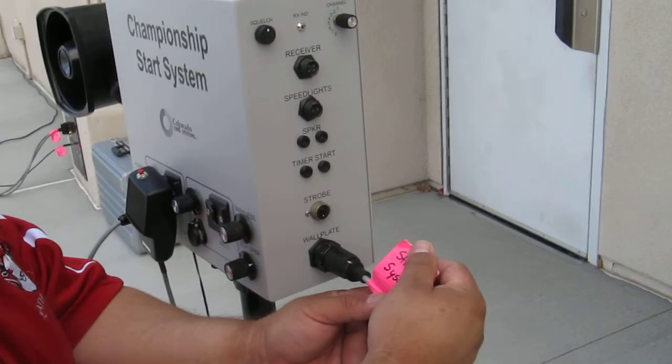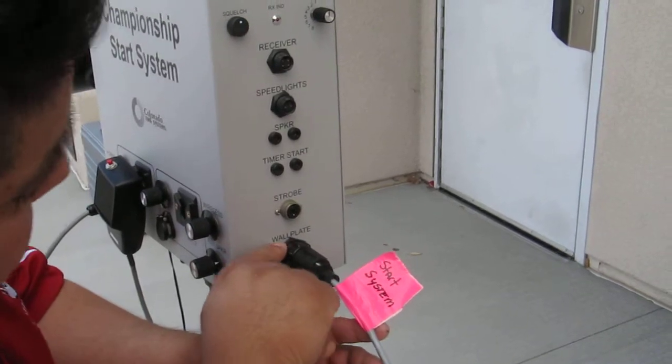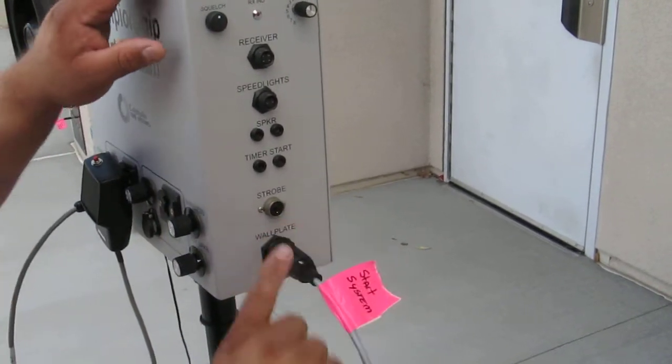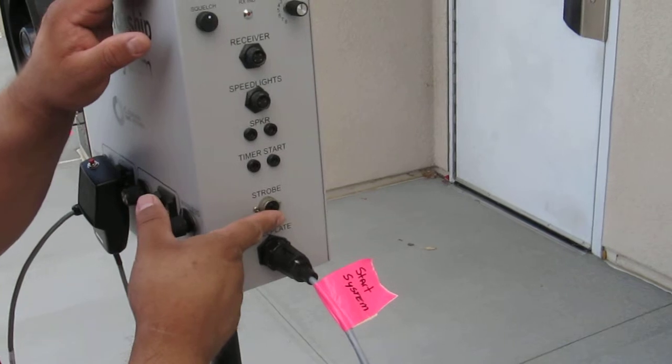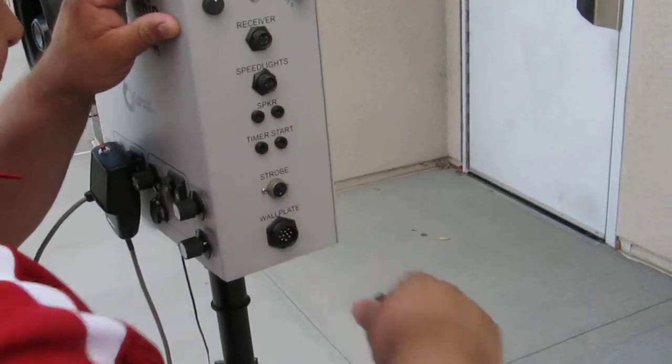What we have here is the other end of the starter system multi-port cable, and it's labeled wall plate. This one cable replaces all of these; you don't really need all of these if you have just this one cable connected.